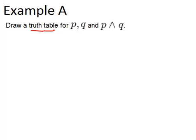When you're doing a truth table the first thing you want to do is figure out how many columns you're going to need. In this case we're drawing a truth table for P, Q, and P and Q.